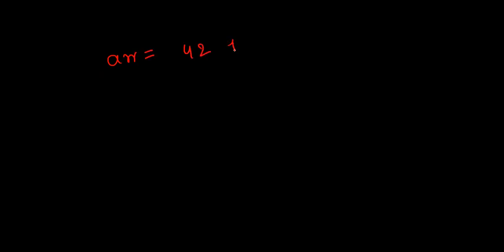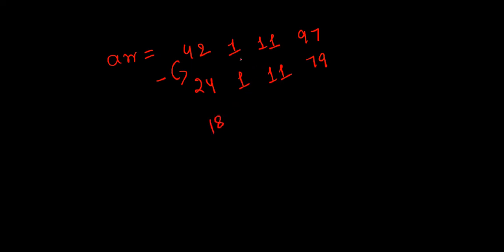Let me walk through an example. Suppose our list is [42, 1, 11, 97]. The reverses are 24, 1, 11, and 79 respectively. Taking the difference of each element and its reverse: 42 - 24 = 18, 1 - 1 = 0, 11 - 11 = 0, and 97 - 79 = 18. So the difference values are [18, 0, 0, 18].